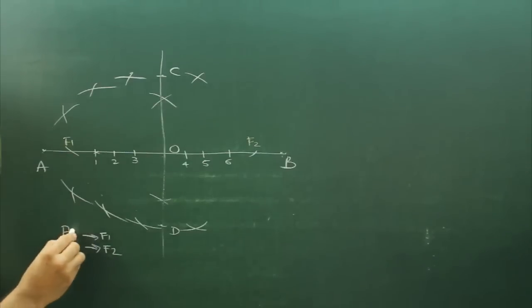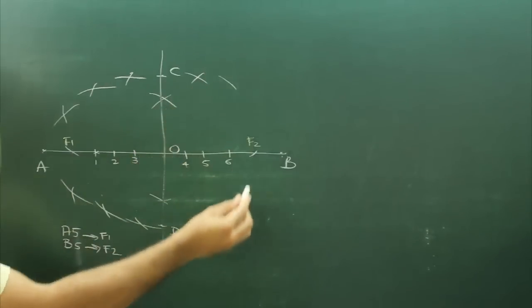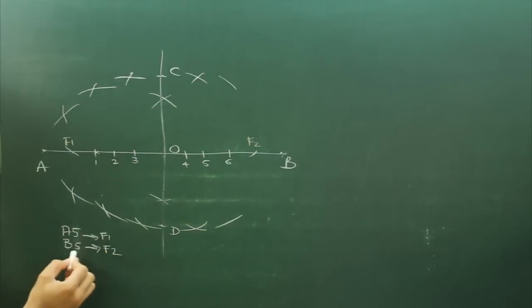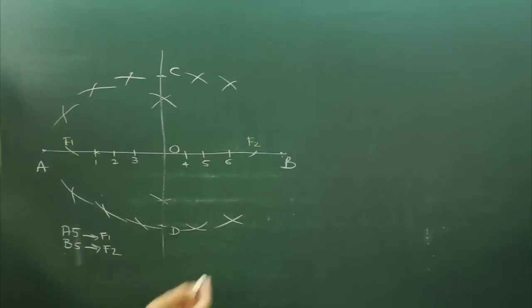Same A5, B5. Take A to 5 from F1. B to 5. Take B to 5 in your compass and from F2 you cut up both sides.